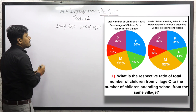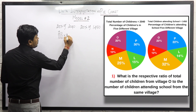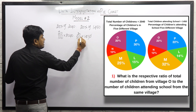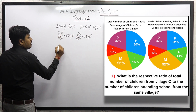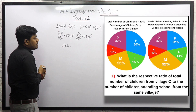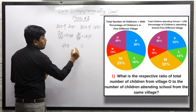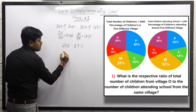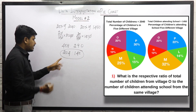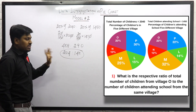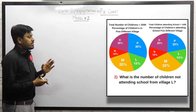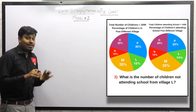We need to find the ratio of these two values: 20/100 × 2040 to 20/100 × 1450. Cancelling common factors, we get 204 to 145. We can't reduce further because the last digit of 204 is 4 and of 145 is 5. So the answer for question number 1 is 204:145.